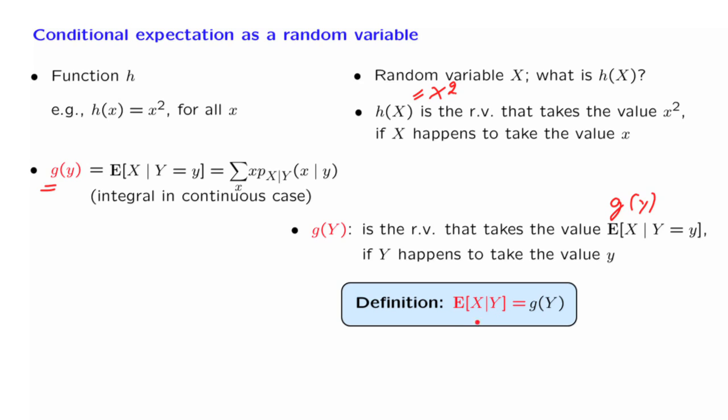To summarize, this notation here stands for a random variable. It is the random variable whose numerical value turns out to be this one if the value of the random variable capital Y happens to be little y. It is a function of capital Y. Once we know the value of capital Y, then the value of the conditional expectation is well defined, it is known, and it's equal to this particular number.